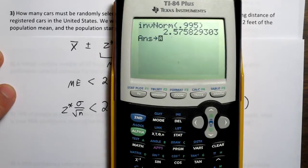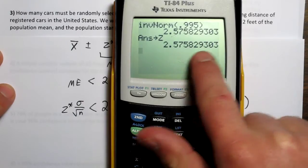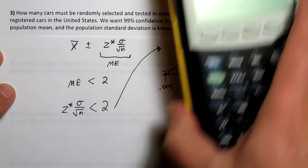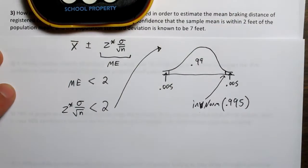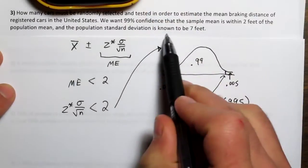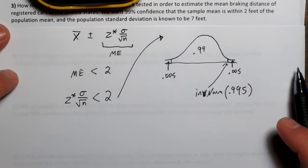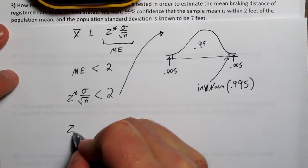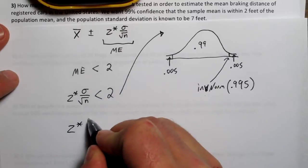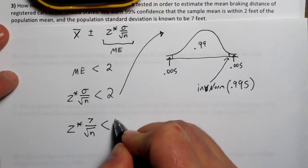I'm going to store this value as, and you can choose any letter by pushing the alpha menu. If I push alpha, I'm going to store it as z since it's z star. So now anytime I type z, it will instead access this number. Alright, so we've got z star. Sigma is given in the problem. It says the population standard deviation is known to be 7 feet. So here's where we're at right now.